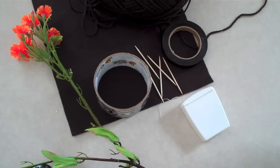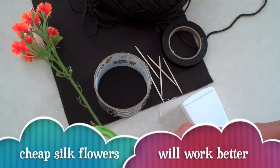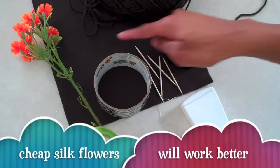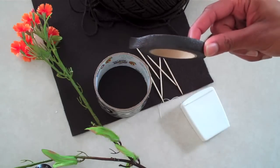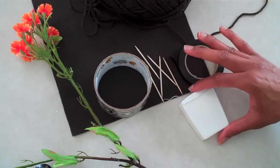I am going to make a bow and arrow using the stem from a silk flower, duct tape, felt, toothpicks, floral tape, yarn, and floss.